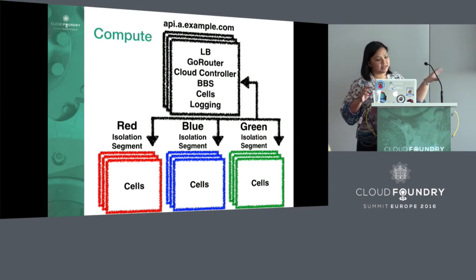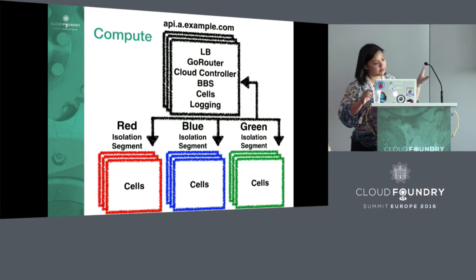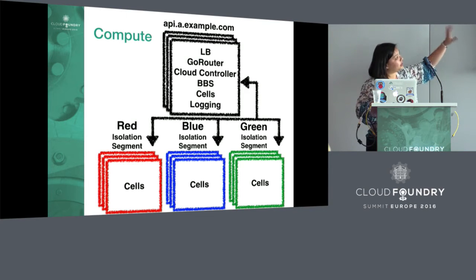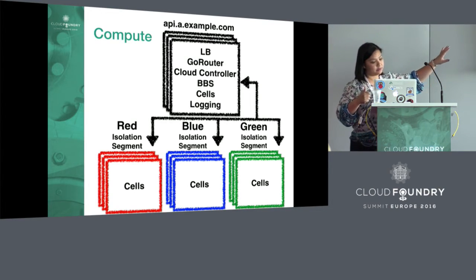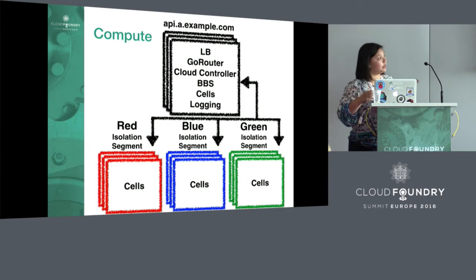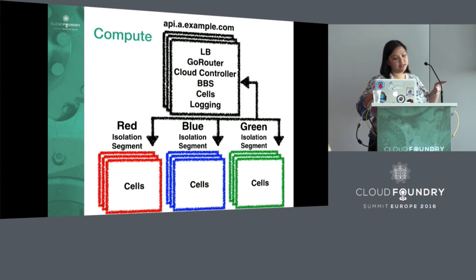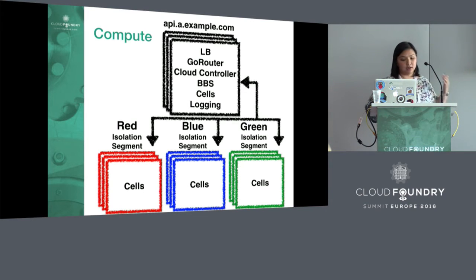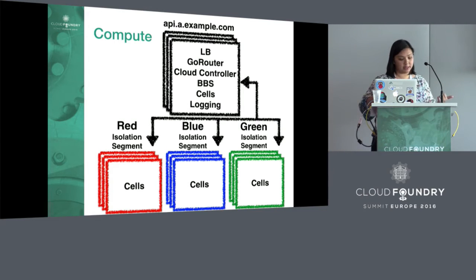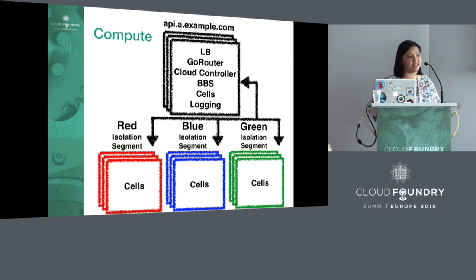This is really the simplest type of isolation segment — it involves deploying an additional set of cells. You've got shared management, routing, and logging, but you can have dedicated compute resources. In this architecture, you could associate different VM types to different isolation segments. Perhaps the blue segment has lots of CPU and solid-state drives, or perhaps you have an organization that has quality of service guarantees such as CPU availability. Or perhaps you're offering Cloud Foundry as a service and you'd like to charge an organization for dedicated usage of a set of cells, like a kind of premium usage.